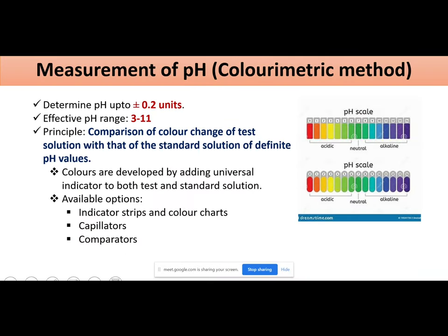Next, we come to the methods of measurement of pH. There are numerous methods of measurement of pH. In our syllabus, we have two: colorimetric and second, electrometric method.